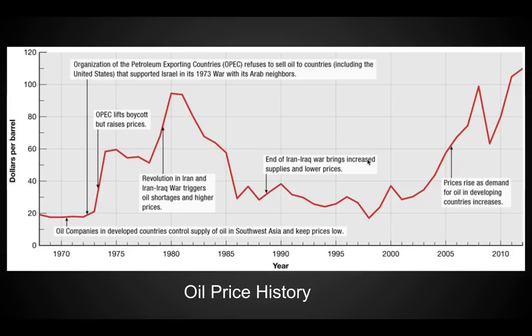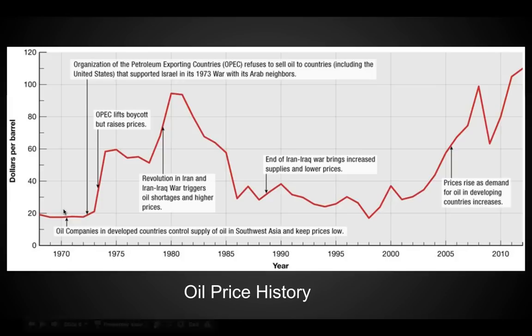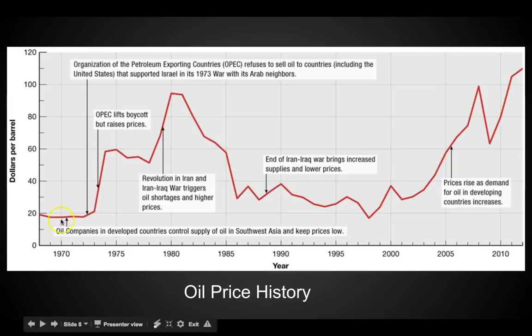Looking at oil price history: back in 1970, oil companies in developed countries were controlling the supply of oil in Southwest Asia, keeping prices low. No problem for consumers in the United States — we were driving cars and getting gas for really, really cheap.